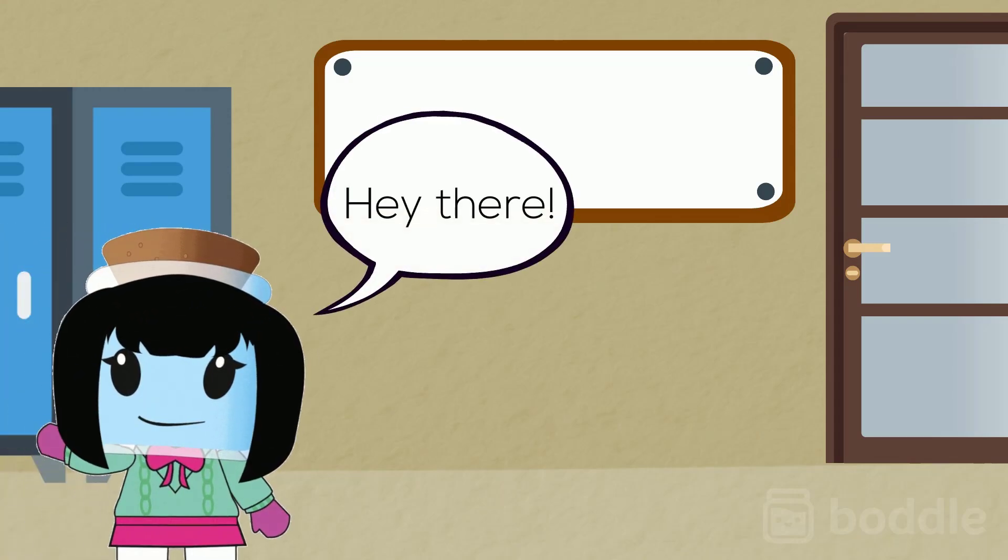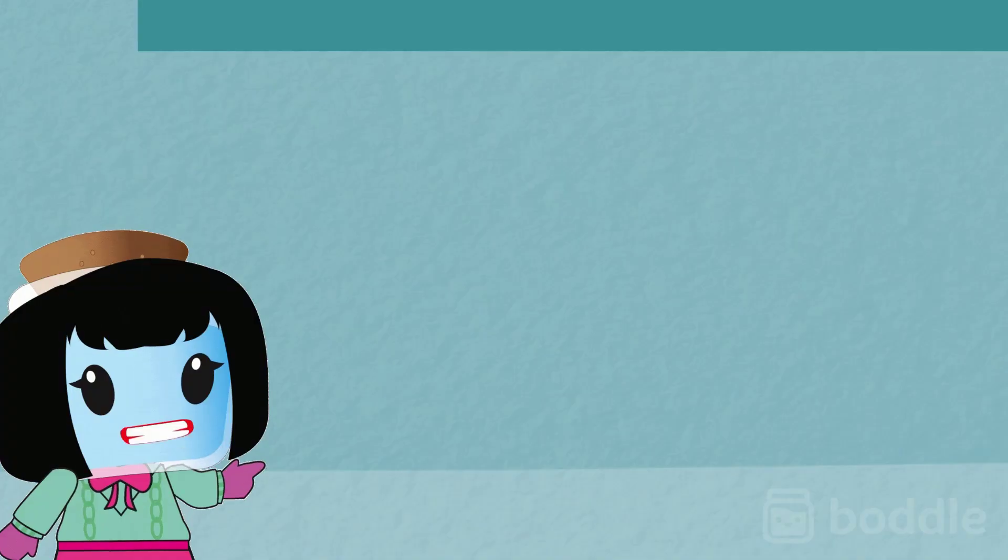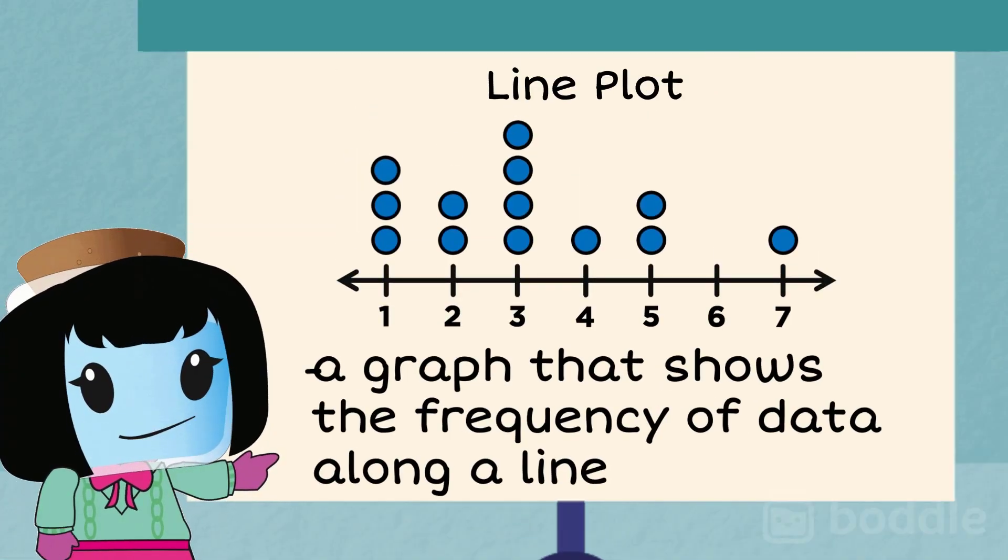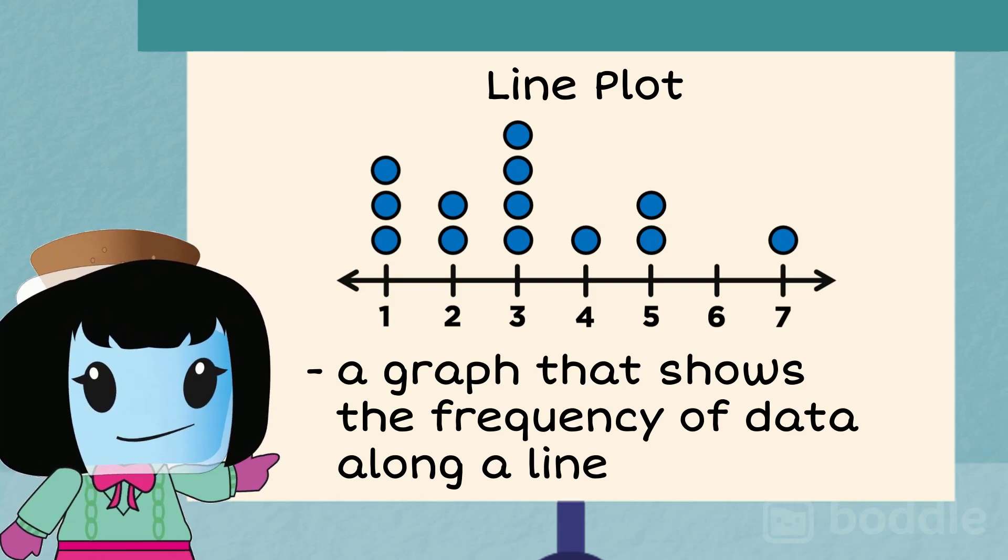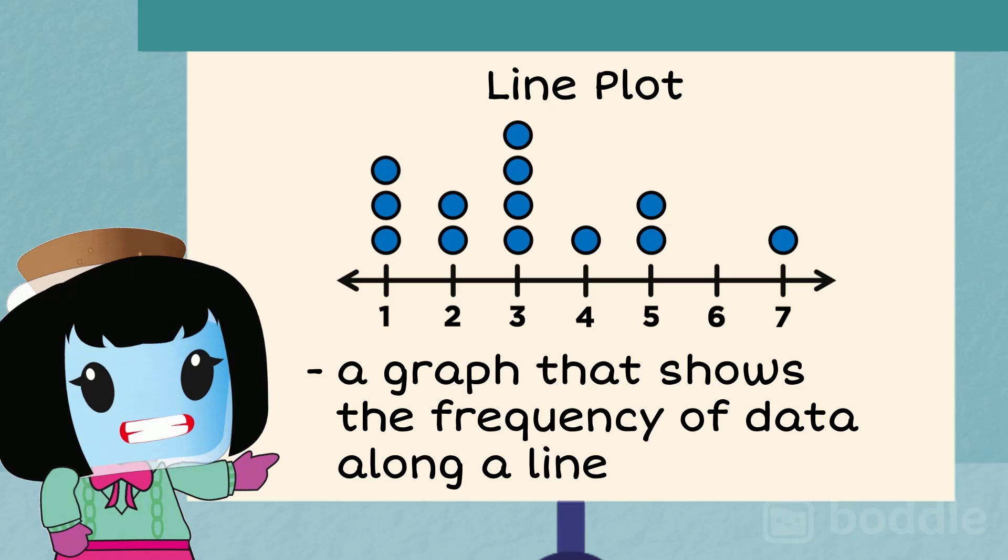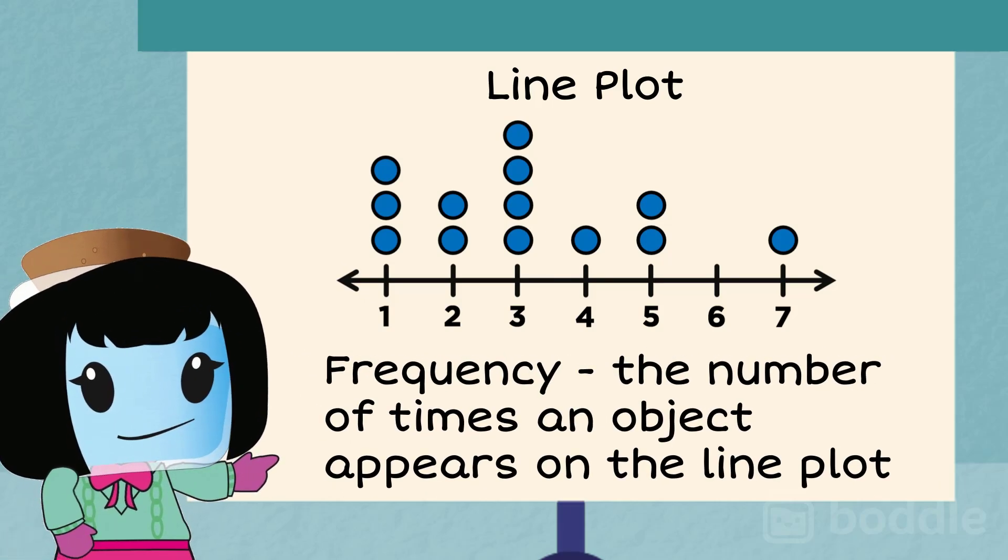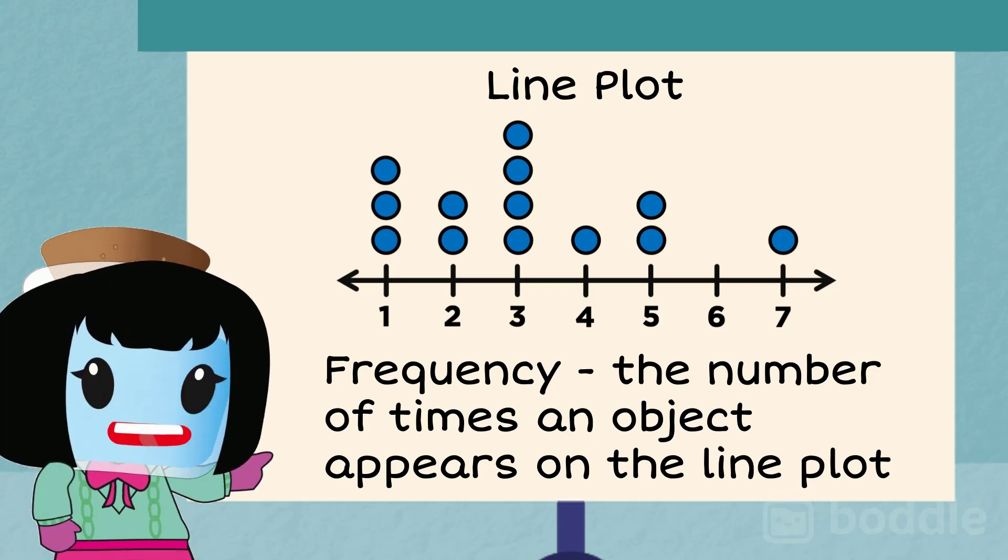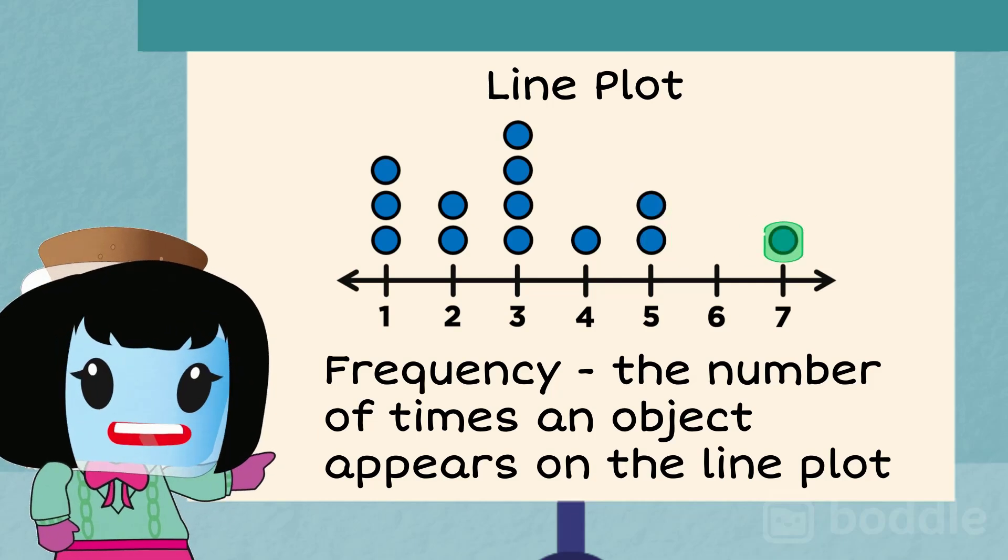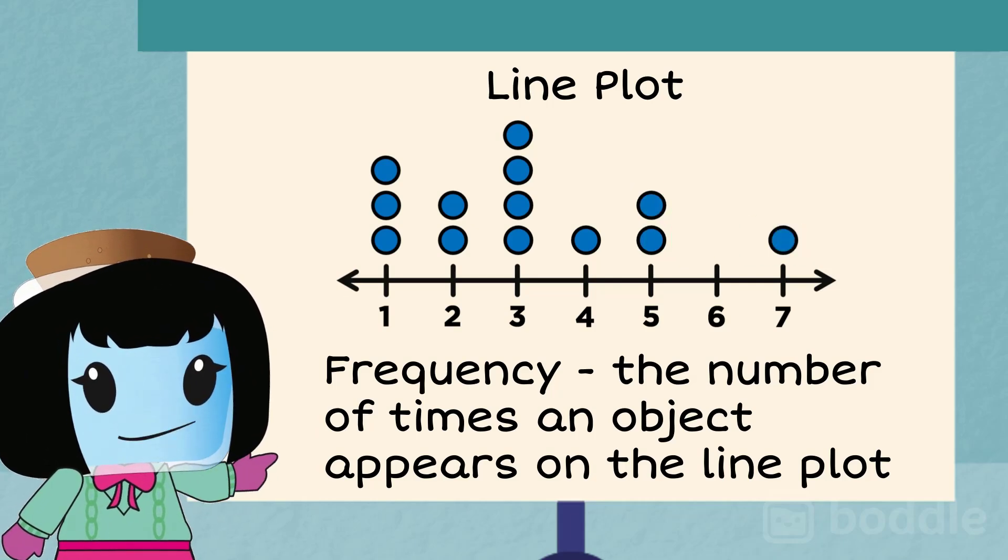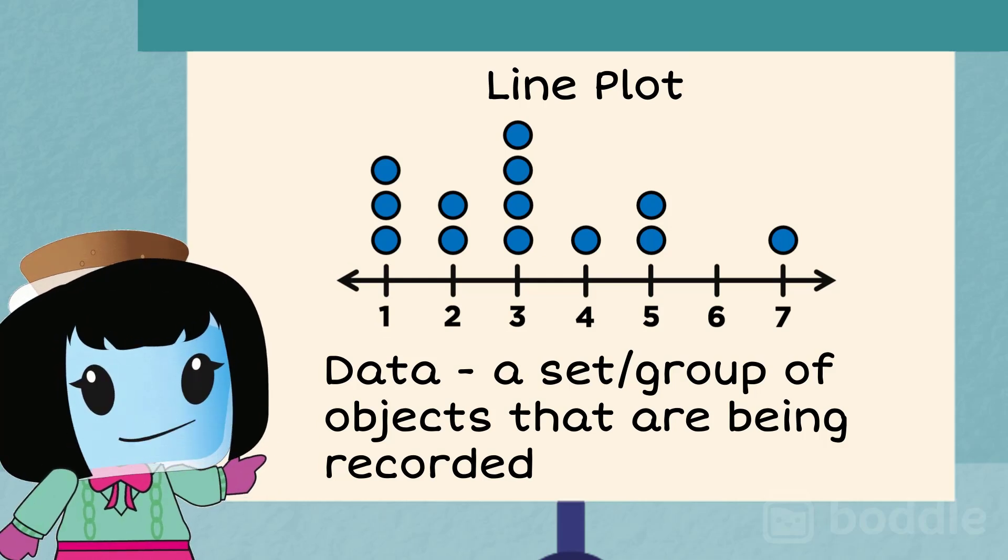Hey there! Today we're going to look at line plots. Line plots are just a type of graph that shows the frequency of data along a line. Frequency is just a fancy word that means the number of times an object appears. Don't forget that data is just a set of objects that are being recorded.